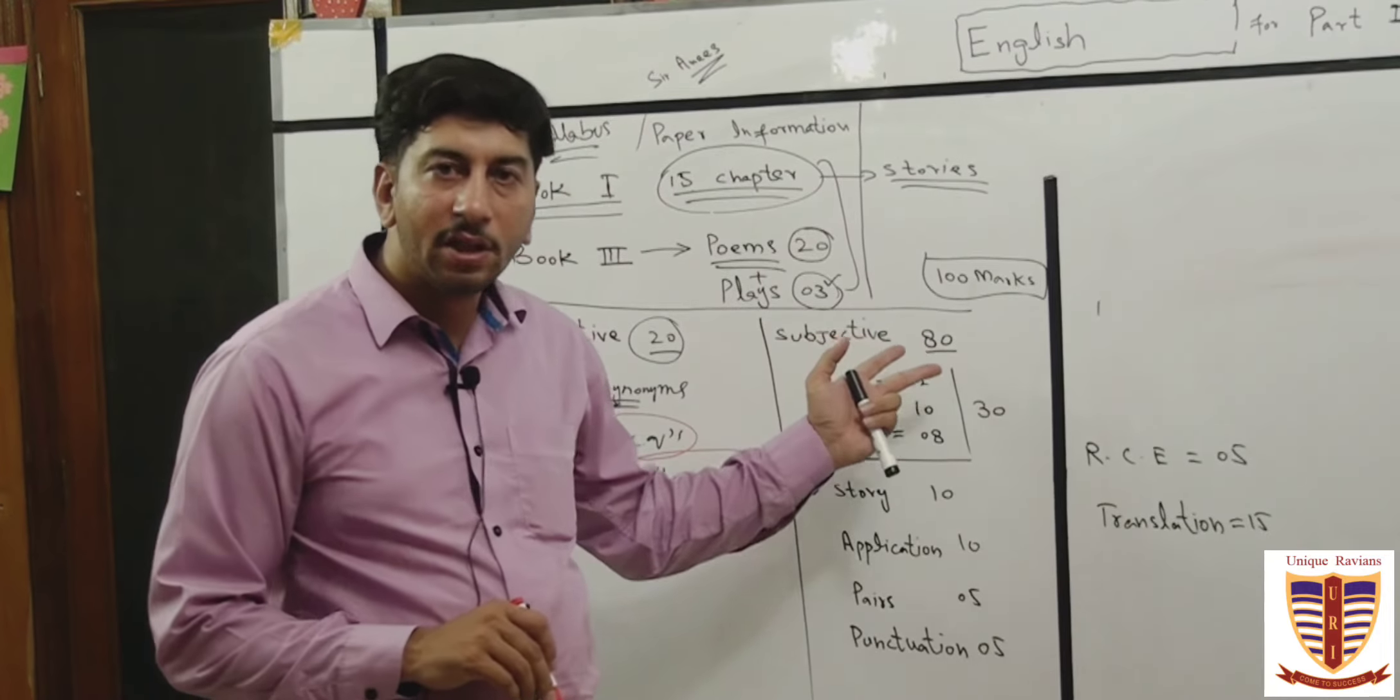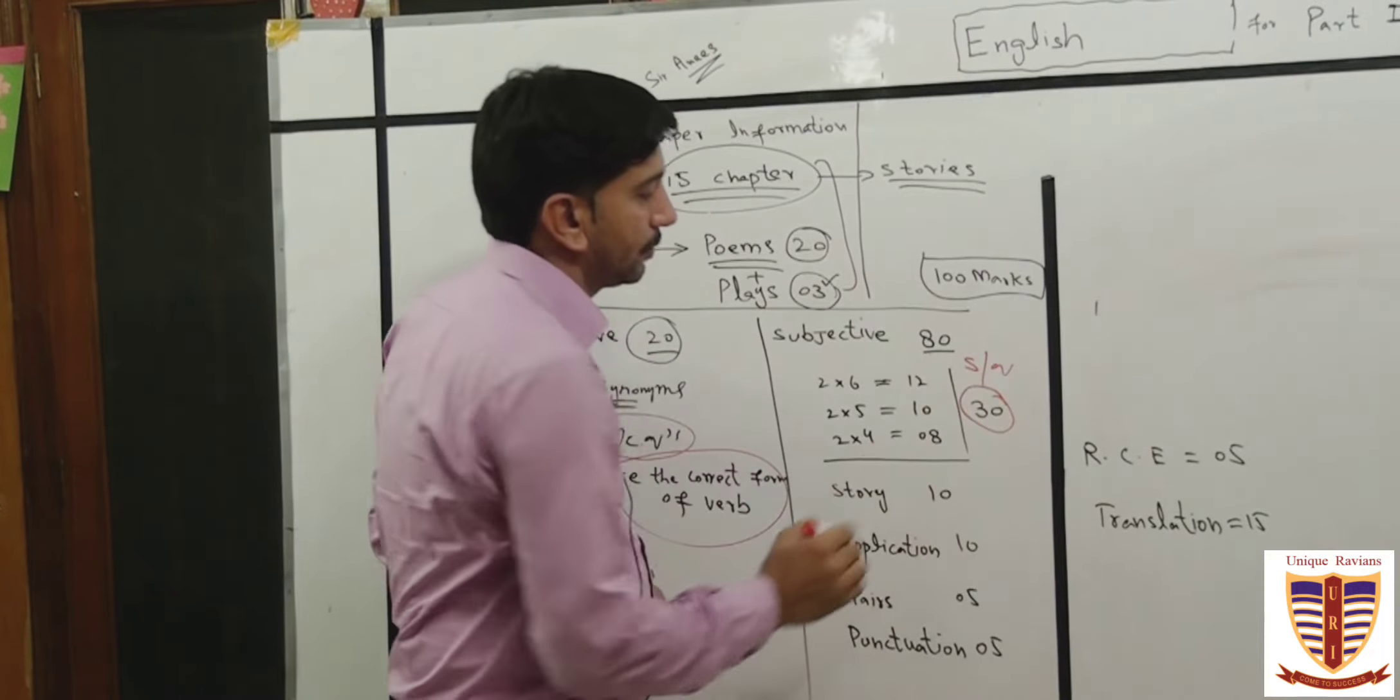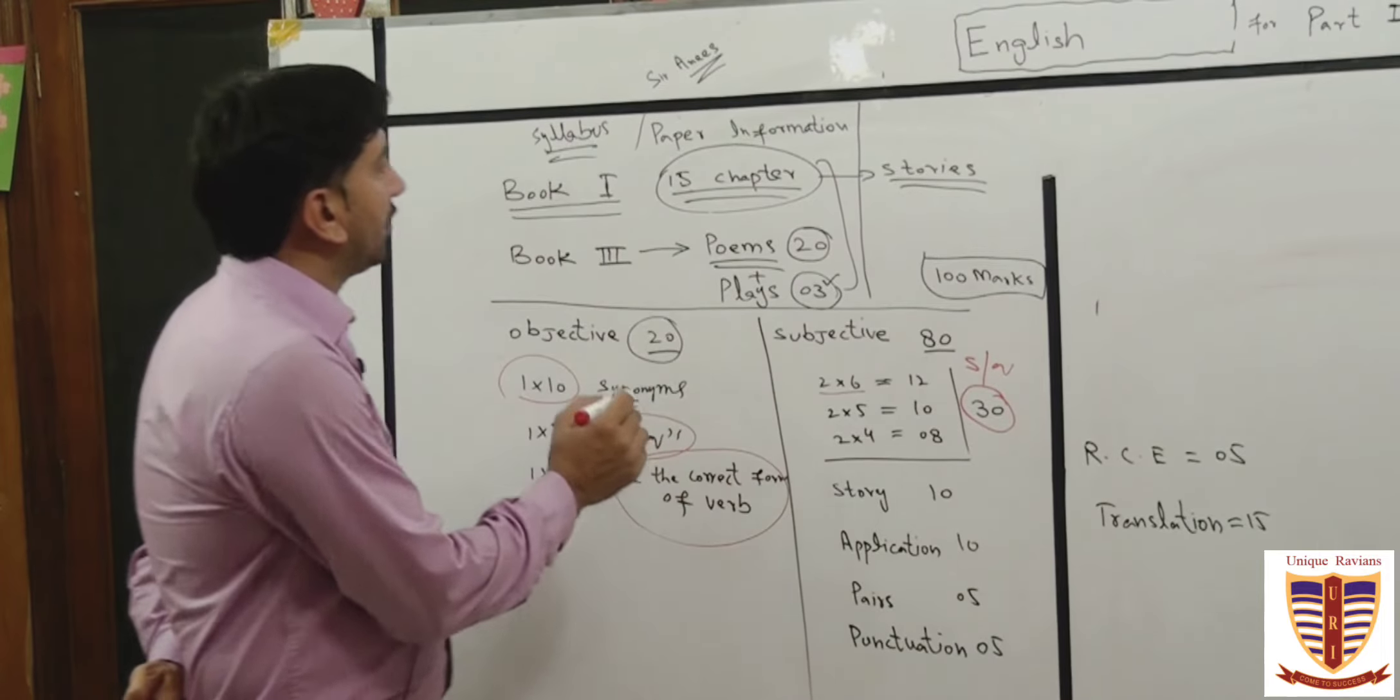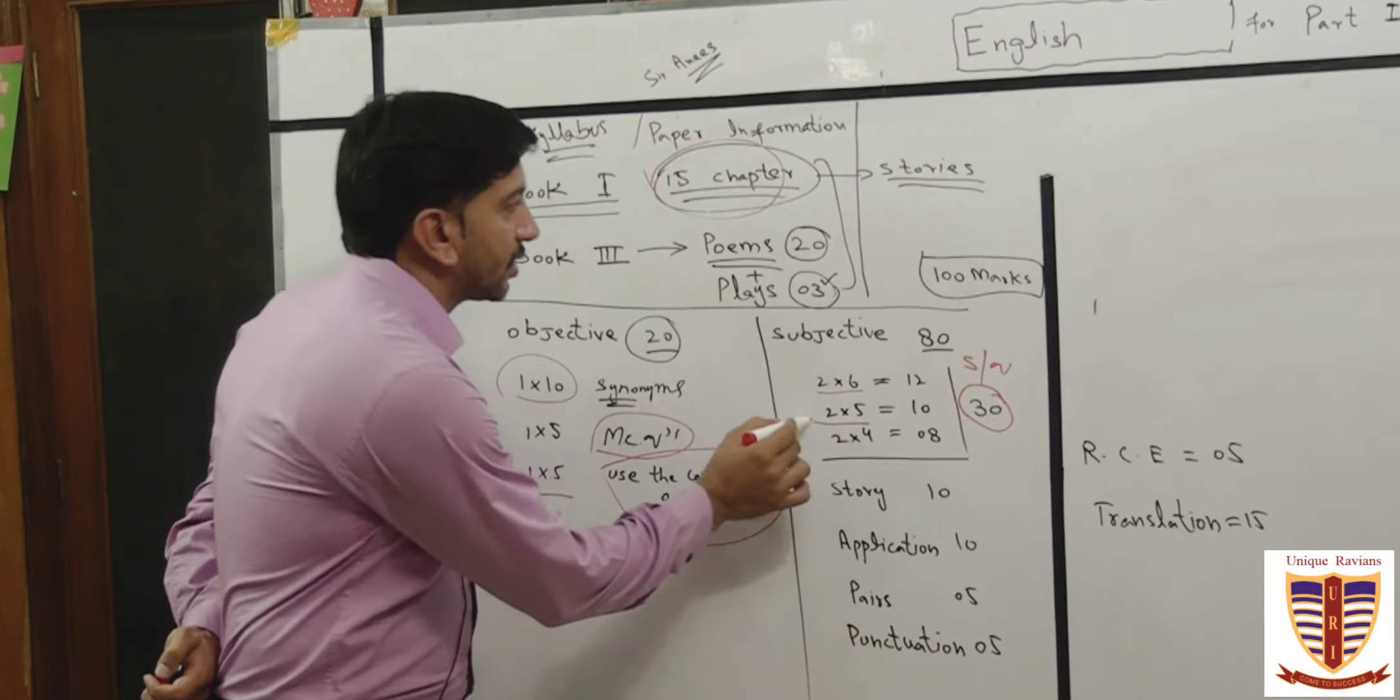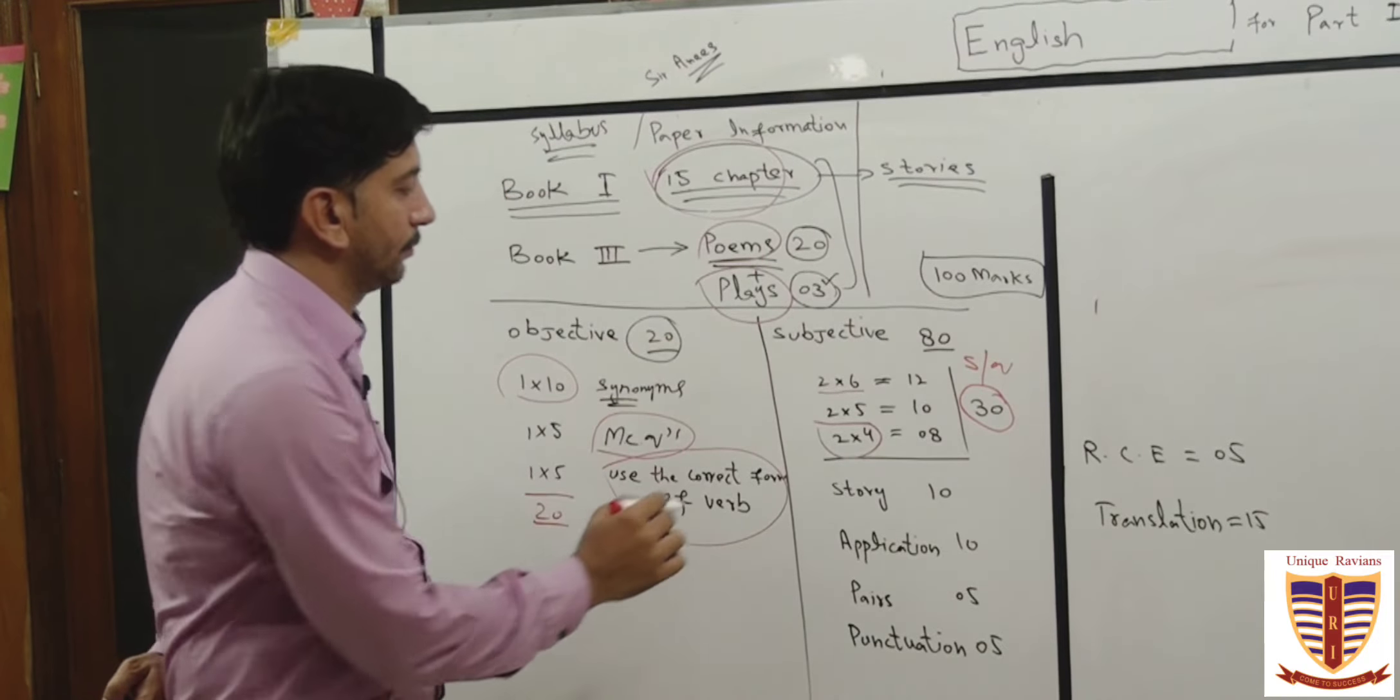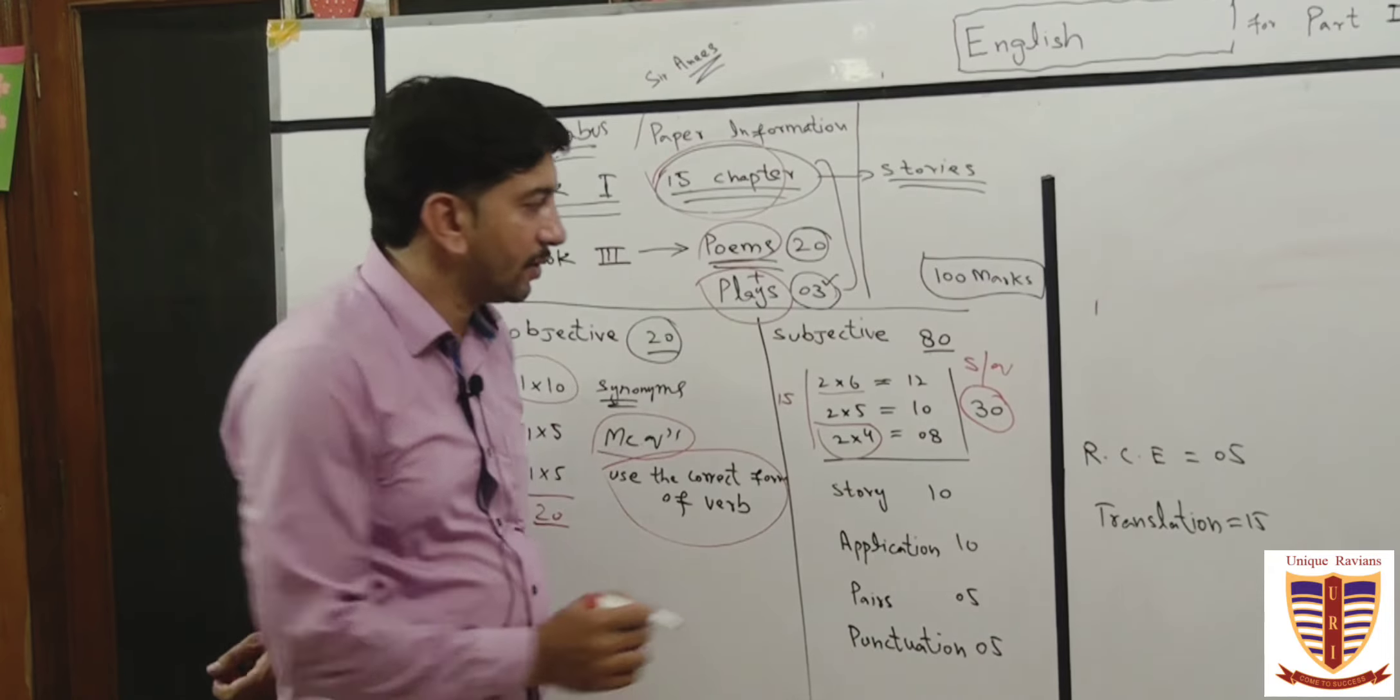Subjective 80 marks, 30 short questions. 30 marks for short questions. 6 short questions from 15 chapters, 5 short questions from plays, 4 short questions from 20 poems. 15 short questions for 30 marks.